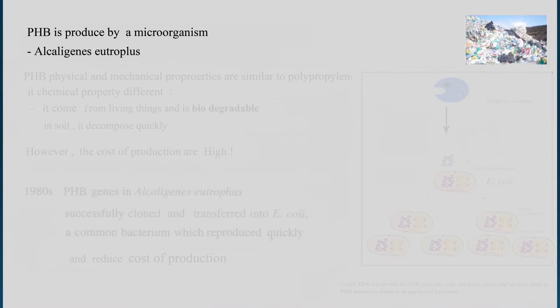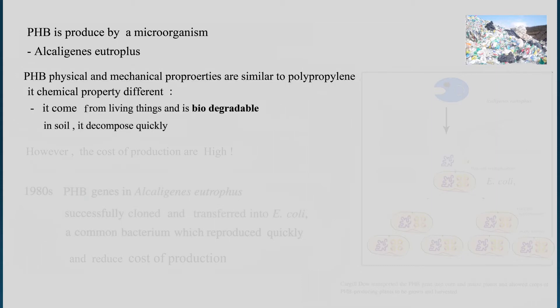PHA is a type of plastic produced by microorganisms. This PHA plastic is very similar to normal plastic in its physical and mechanical properties. For example, when you heat this plastic it will melt,